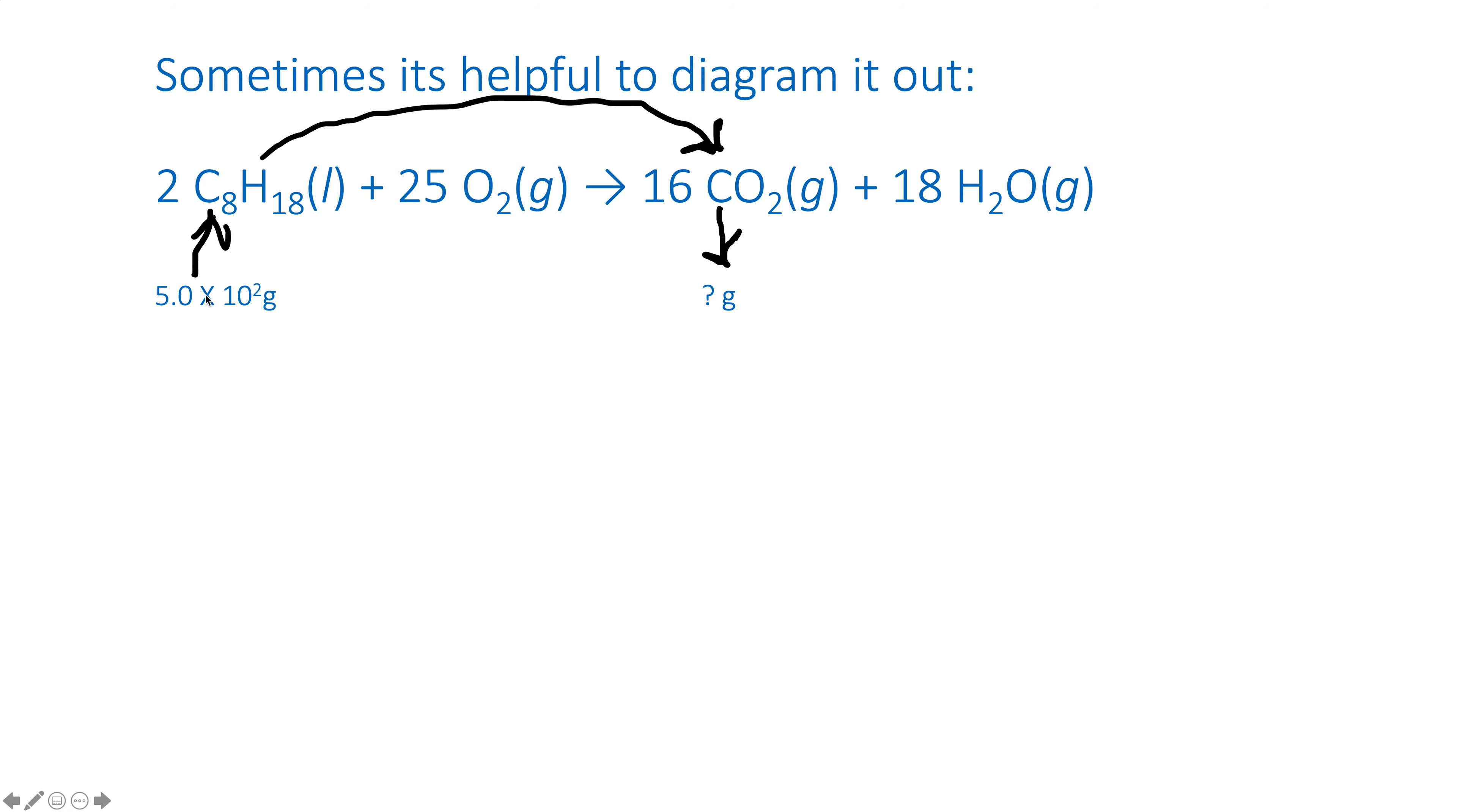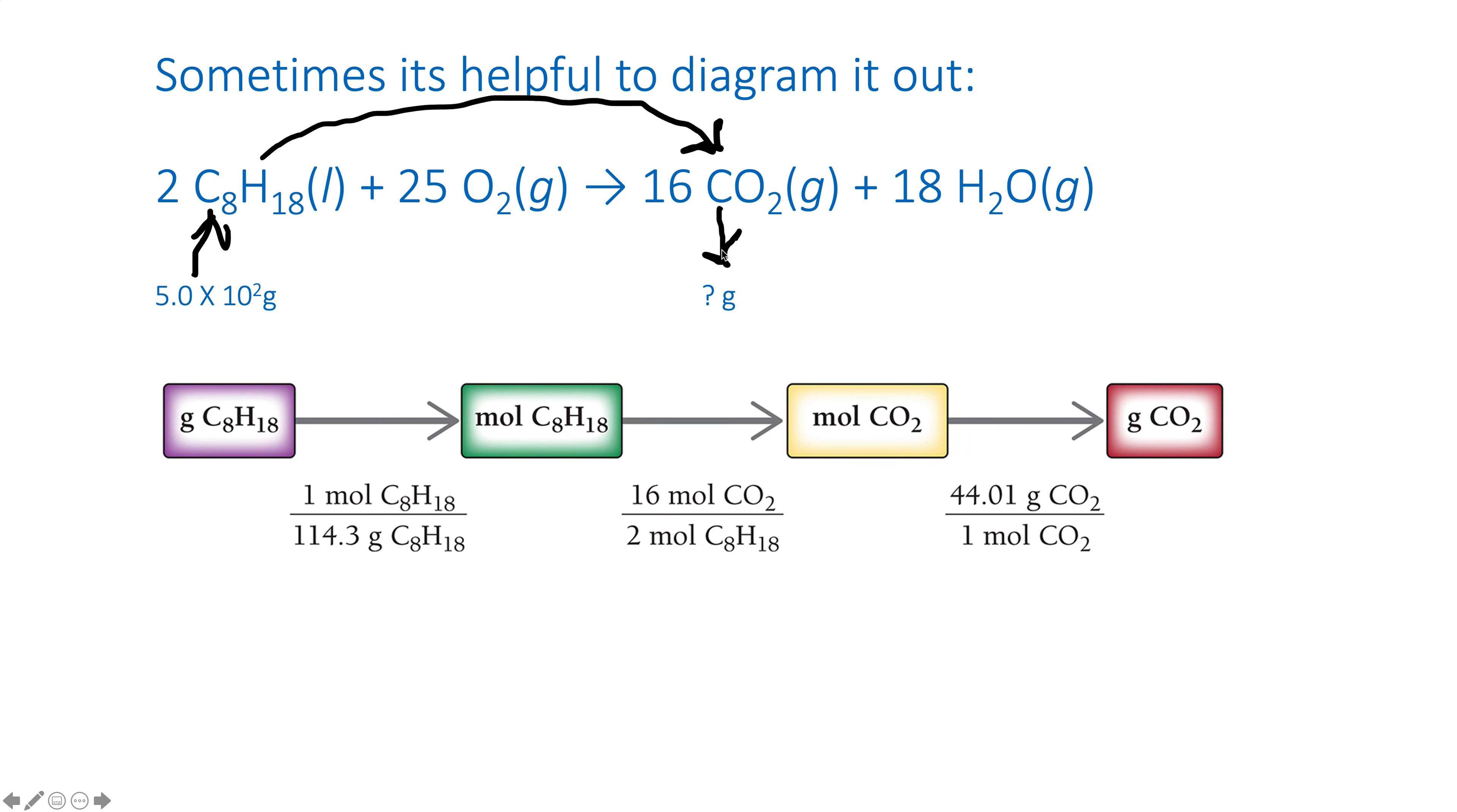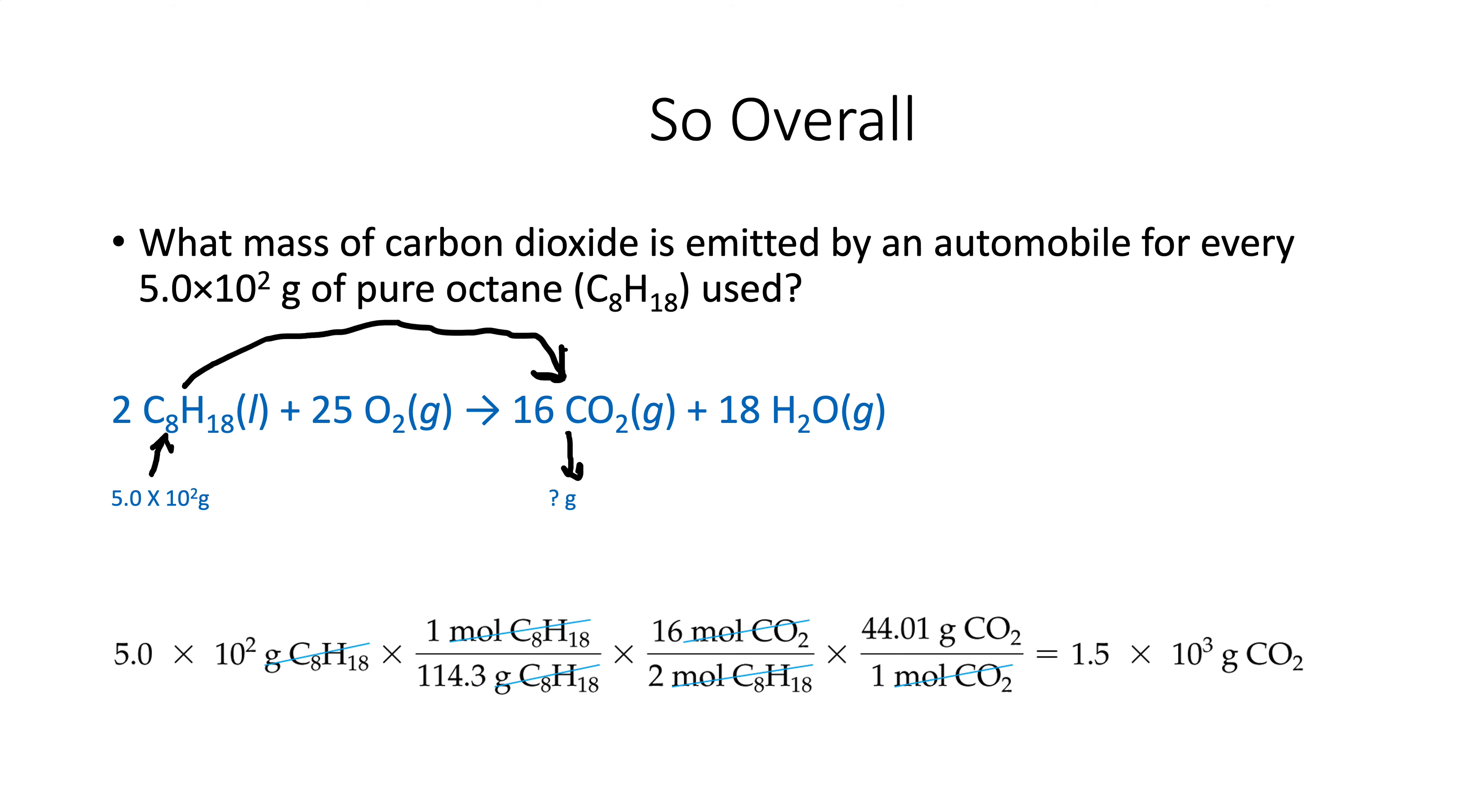Sometimes it's helpful to diagram it out. If you look back at what we had, we're going to say we had the 500 grams. We're going to get on the mole highway here, take the mole highway to carbon dioxide, and then get off the mole highway. You can diagram it this way if you want as well. It's just another way to do the same thing.